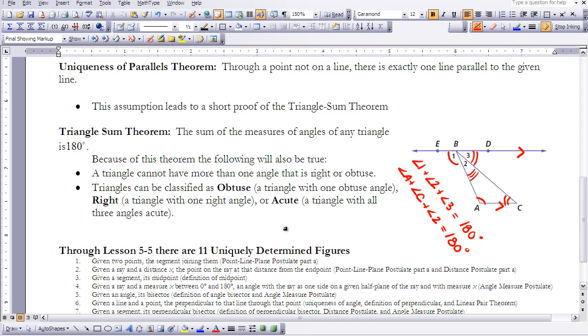Now, with the triangle sum theorem, we also have a couple other things that happen. A triangle cannot have more than one angle that is right or obtuse. And then triangles, because of this, triangles can be classified as obtuse, a triangle with one obtuse angle. Right, which is a triangle with one right angle. Or acute, a triangle with all three acute angles.